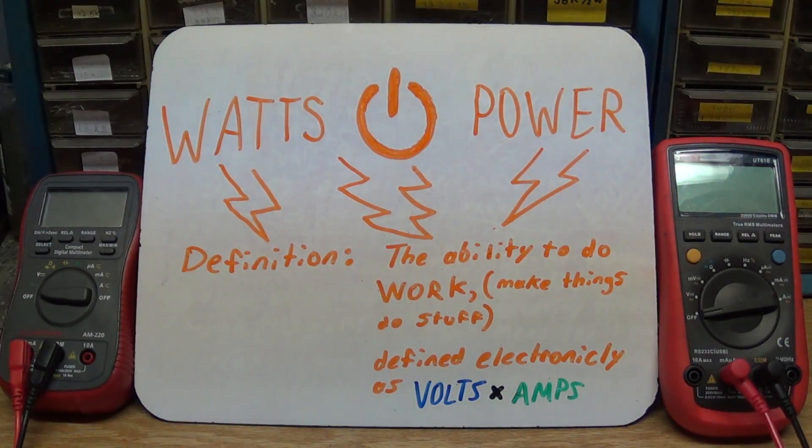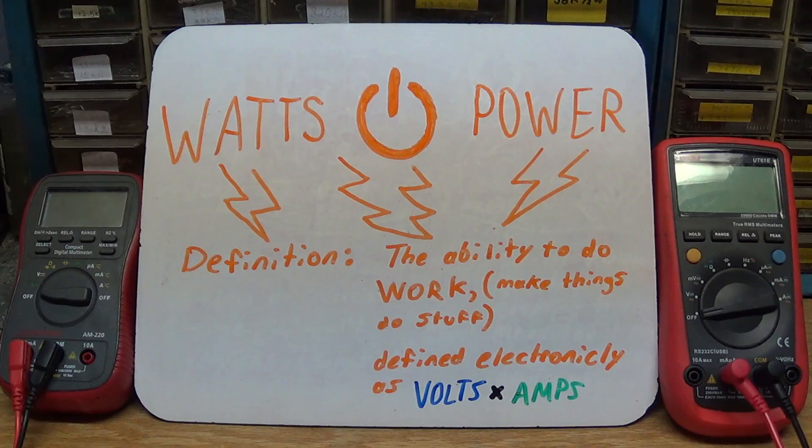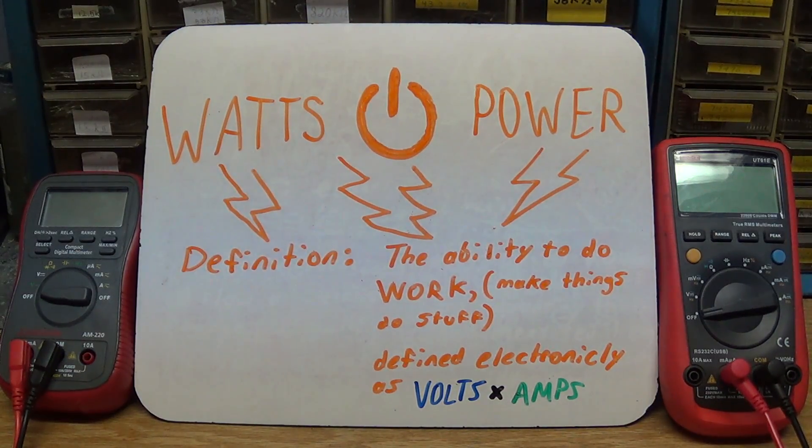Alright, now that we've covered volts, amps, and ohms, let's go over watts. So what are they? Well a watt is just a measurement for power. And power is just the ability to do work. In other words, it's the power to make things do stuff. Now electronically, it's defined as volts times amps. We'll be getting into that in just a second.